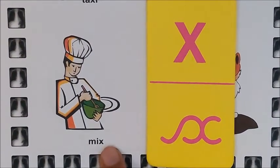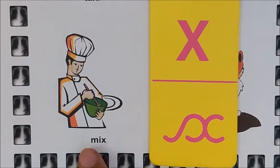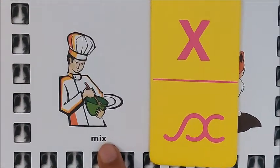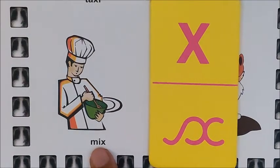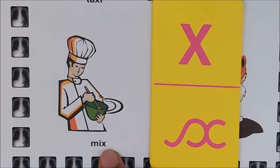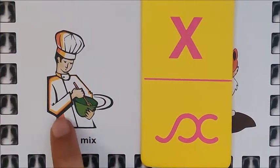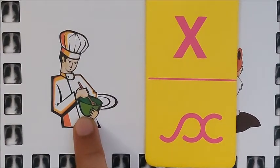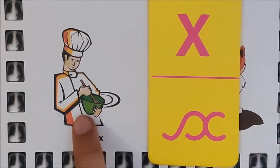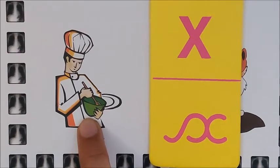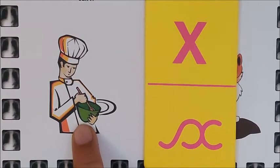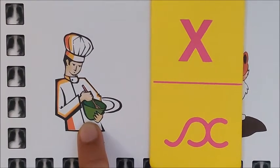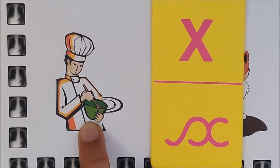Mix. Repeat after me children: Mix. Did you hear the sound of X in the word mix? Look at this baker children — this baker is mixing. In the bowl he must have added some sugar, milk, and he is now mixing it. Mix — this is the action of mixing.